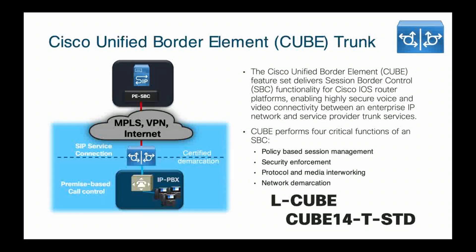With the hardware platform licensing out of the way, let's talk about CUBE licensing specifically — this is the licensing for concurrent sessions through the device. L-Cube is the top-level SKU. Cube 14-T-STD is the standard trunking license. As you can see from the diagram, this is termination of sessions from a service provider. You would put this in front of your IP PBX or Unified Communications Manager, and the phones register to that PBX for call control. Sessions to the PSTN go out through your border controller. You have one license per concurrent session in this model.